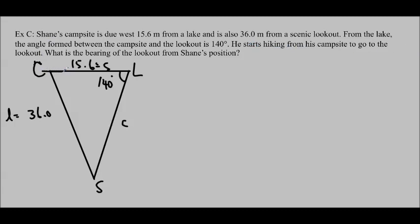We want to know if he starts hiking from his campsite to go to the lookout, what is the bearing? Remember that bearing starts from due north and we are measuring from due north in the clockwise direction. So we want to know what this angle is. We're going to find this angle and then we're going to add 90 degrees to it. We're going to use the sine law. We'll first note that this is an obtuse angle, so we know we don't need to use the ambiguous case because we wouldn't be able to have two obtuse angles in one triangle.